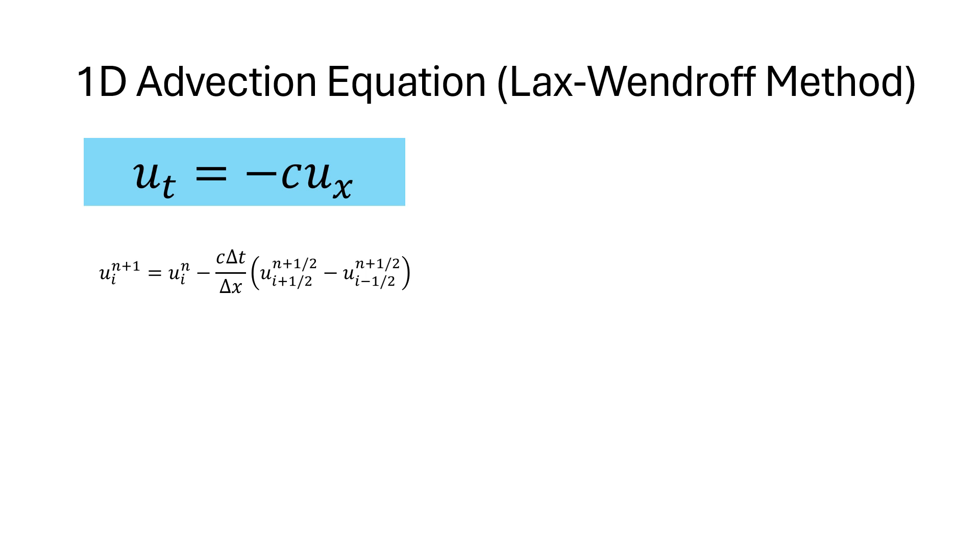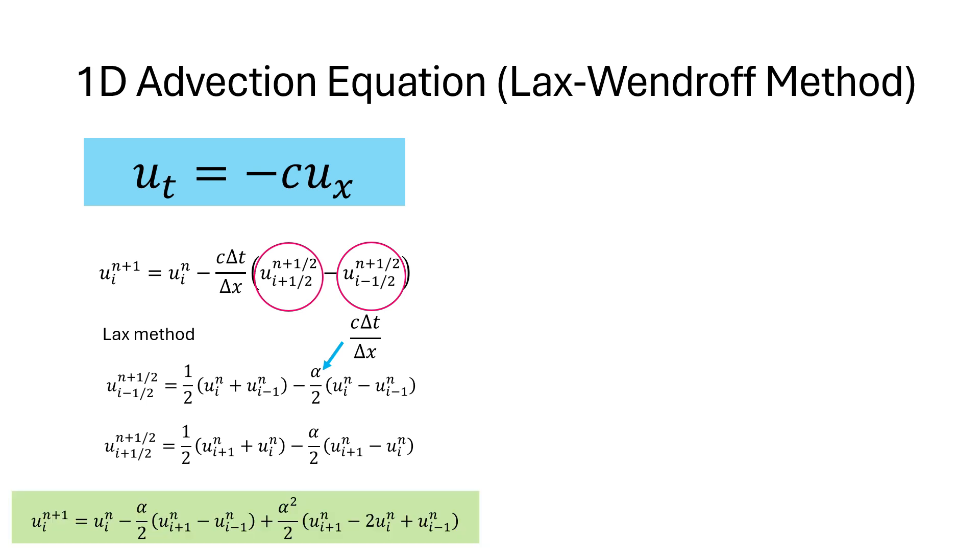Then we can calculate these quantities using the Lax method. Alpha here is equal to c delta t divided by delta x. Plugging these quantities into the above equation will give us the Lax-Wendroff scheme.